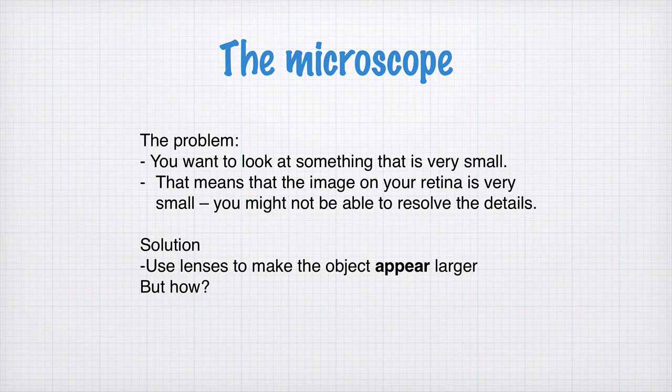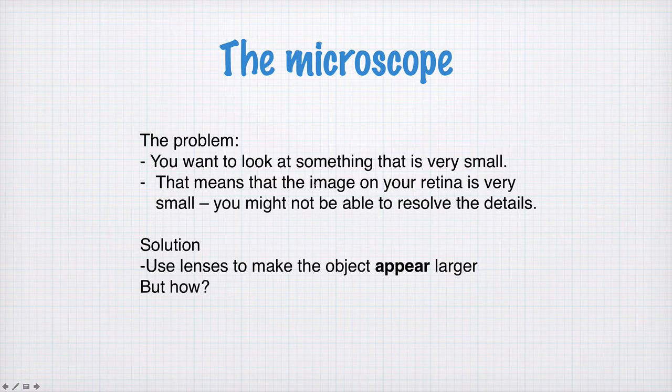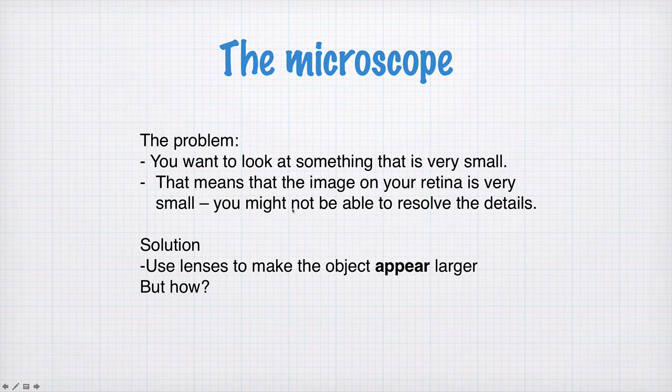So first off we're going to look at the microscope. Now to summarize, the problem is that you want to look at something that is very small. That means the image on your retina is very small and you might not be able to resolve the details, as we discovered by looking at the example of the retina display question. Now the solution is to use lenses to make the object appear larger. But how?